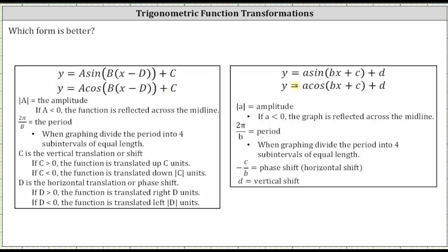In both forms, the absolute value of a is equal to the amplitude, and if a is less than zero, the function is reflected across the midline. In both cases, two pi divided by b is equal to the period, where in factored form b is the constant factored out of the binomial factor of x minus d, and in expanded form b is just the coefficient of x.